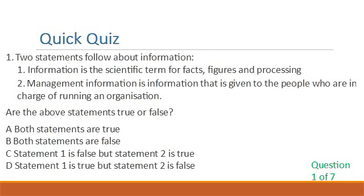Quick Quiz Question 1. Two statements follow about information: 1. Information is the scientific term for facts, figures, and processing. 2. Management information is information that is given to the people who are in charge of running an organization. Are the above statements true or false? A. Both statements are true. B. Both statements are false. C. Statement 1 is false but statement 2 is true. D. Statement 1 is true but statement 2 is false.